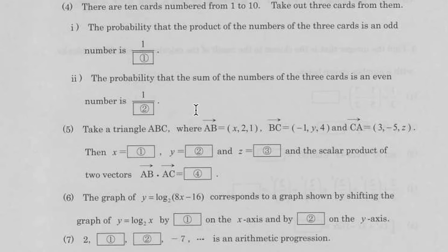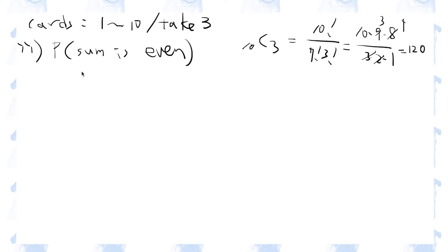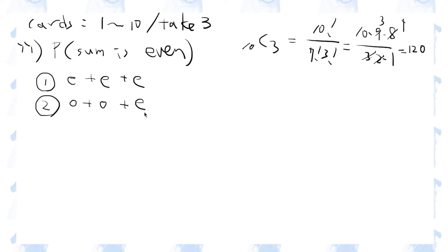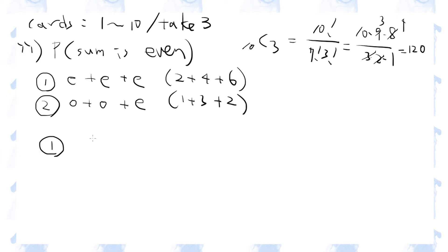Part 2 of question 4: what is the probability that the sum of the numbers of the 3 cards is even? For the sum of 3 numbers to be even, we need either even plus even plus even, or odd plus odd plus even — for example, 2 plus 4 plus 6, or 1 plus 3 plus 2. For the first case, there are 5 even numbers between 1 and 10, so 5 choose 3 equals 10.